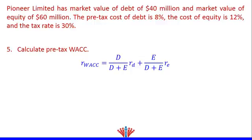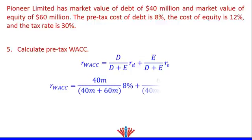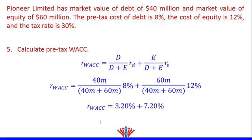So pre-tax WACC is $40 million divided by ($40 million + $60 million), multiplied by 8%, plus $60 million divided by ($40 million + $60 million), multiplied by 12%. This equals 3.2% plus 7.2%, giving us a pre-tax WACC of 10.4%. Thank you for watching this video.